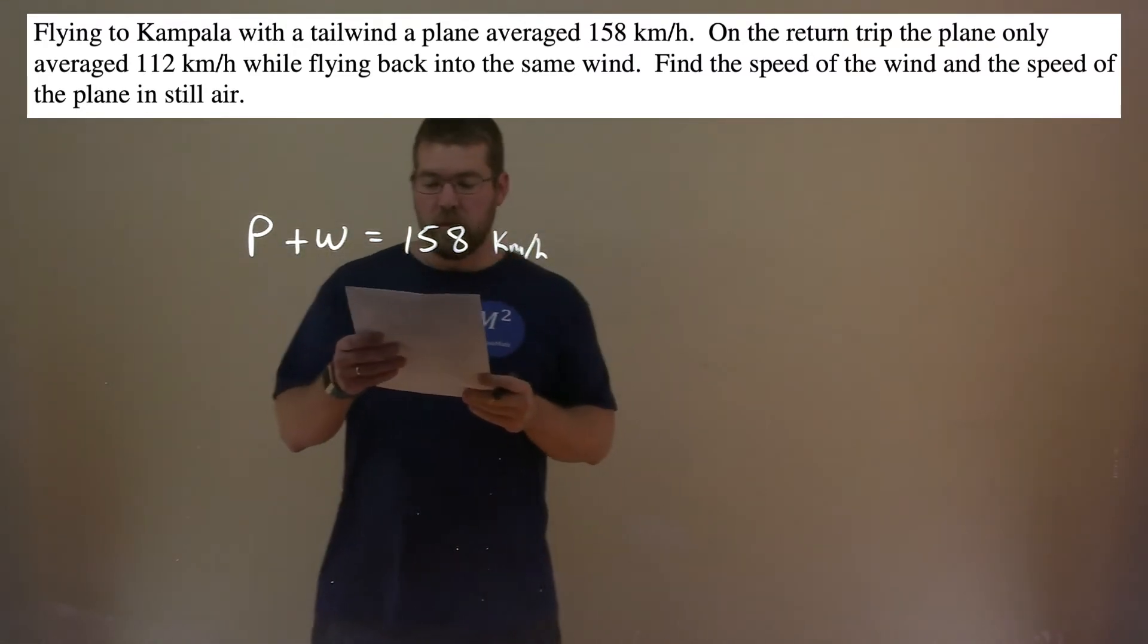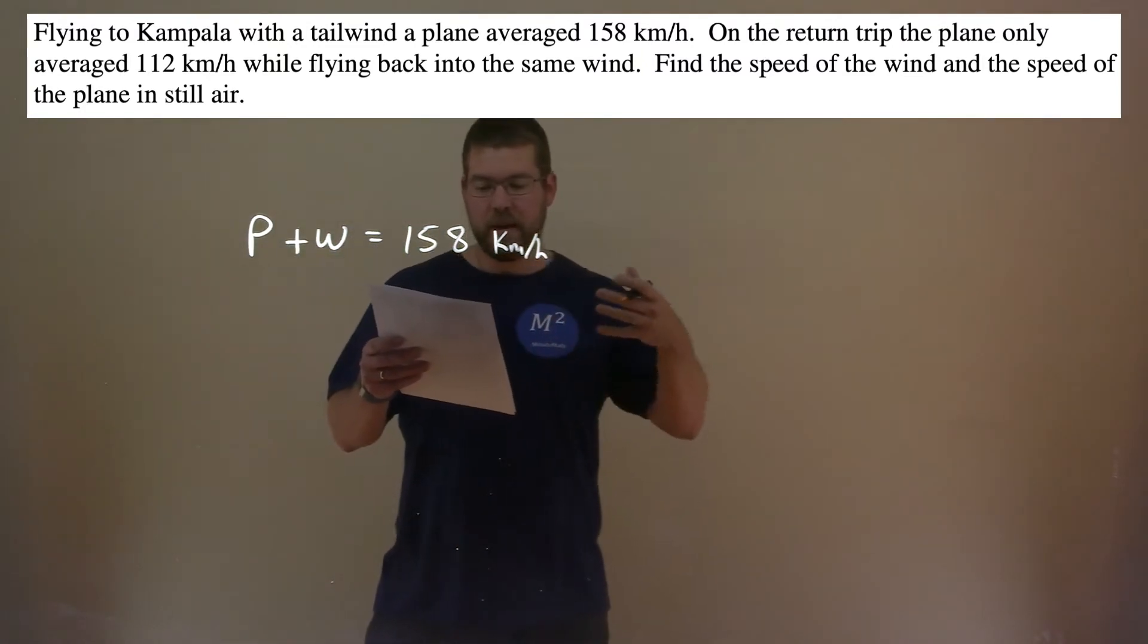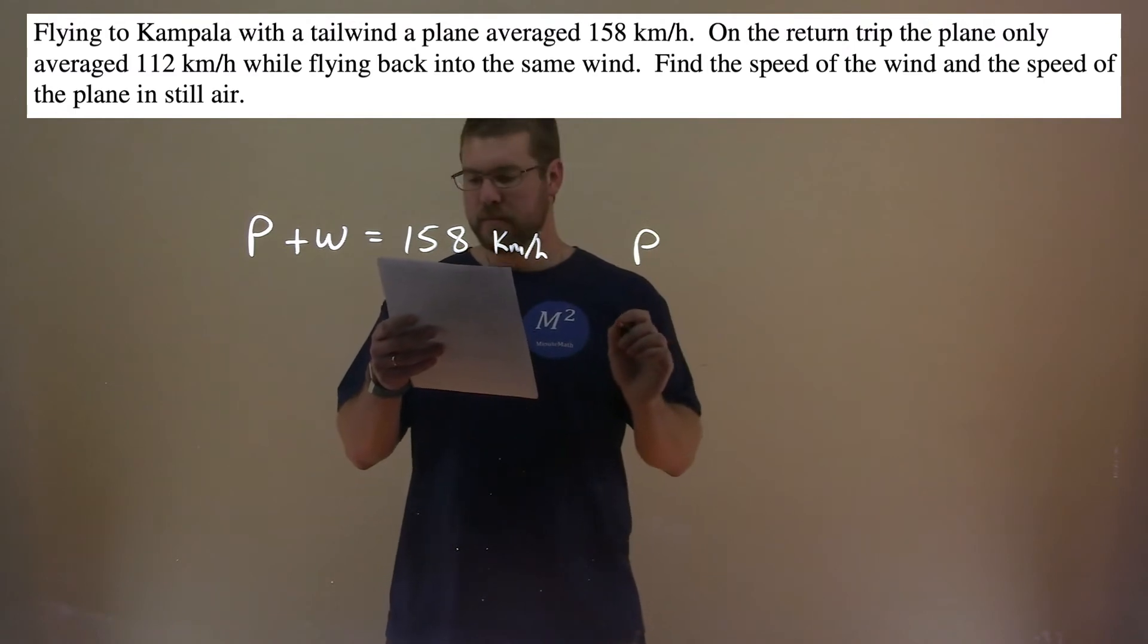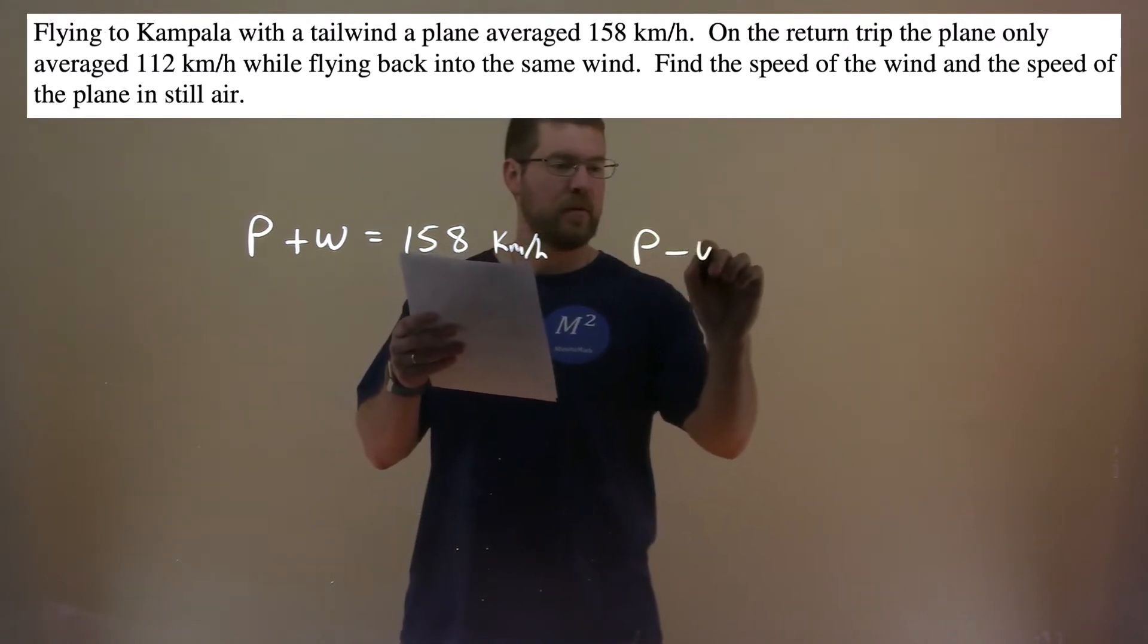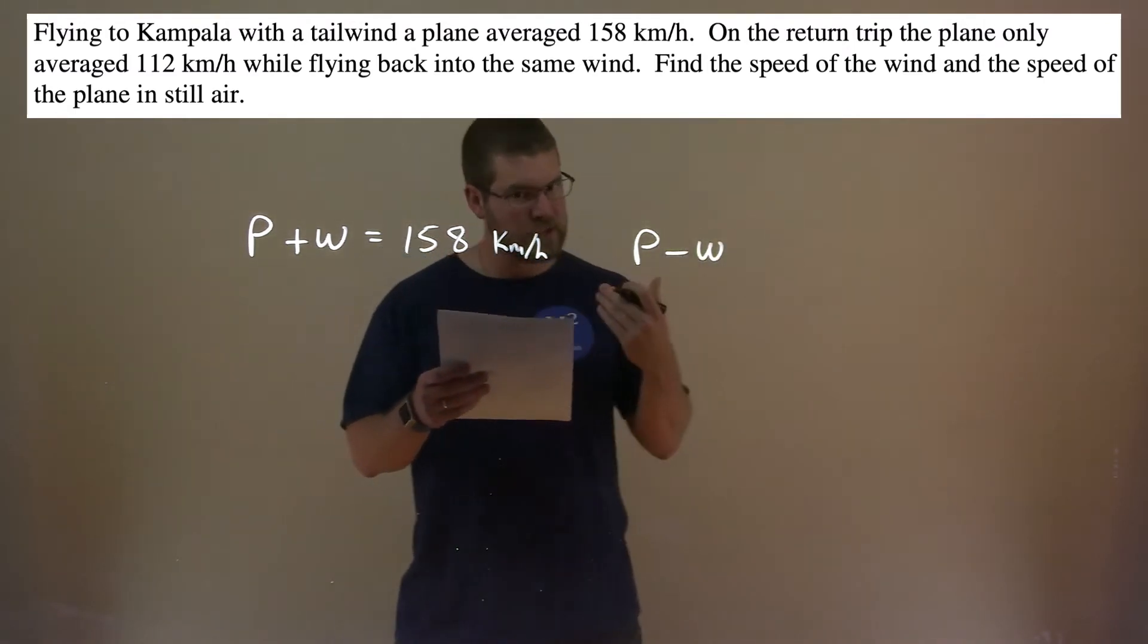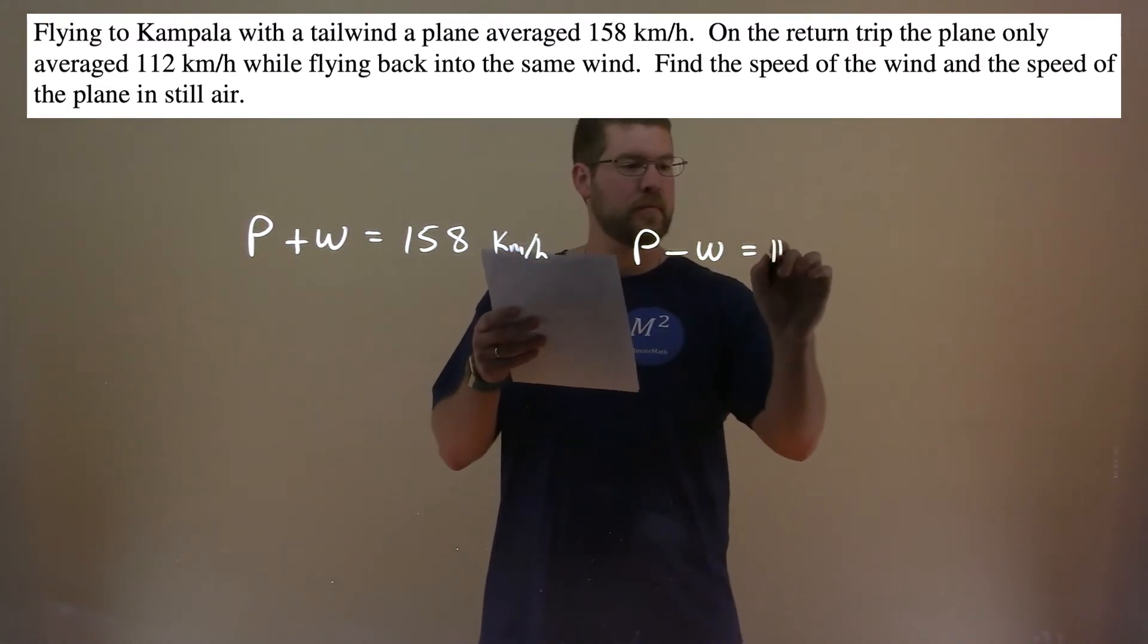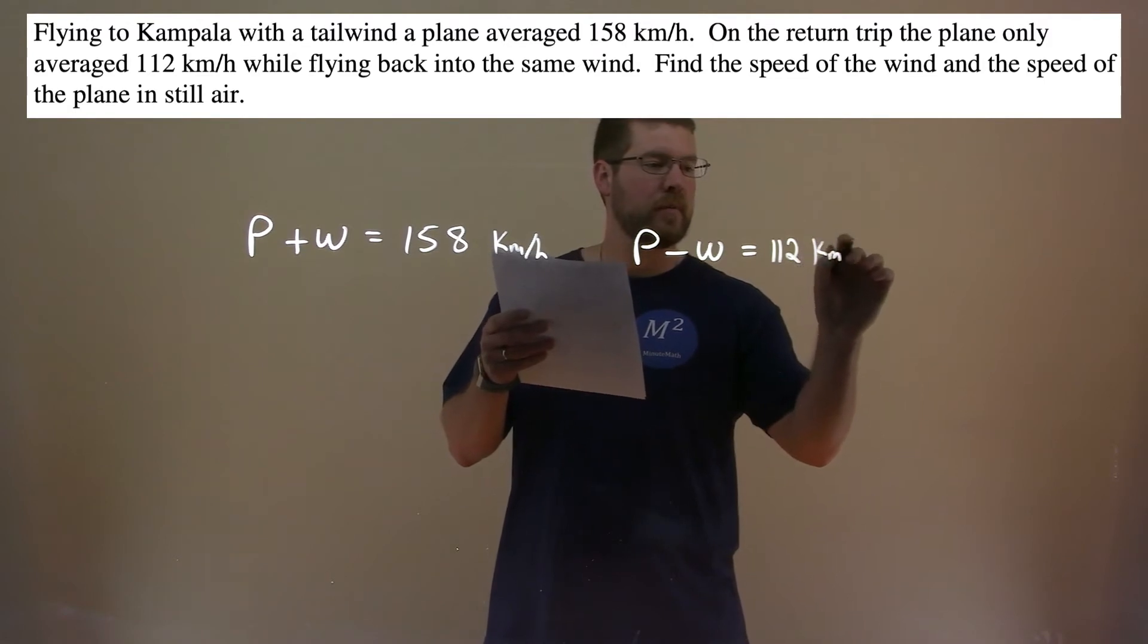Now, they said on the flying back though, so for flying back, the second equation, we have the plane speed minus the tailwind. Because now we're going into the wind. And they said that was equal to 112 kilometers per hour.